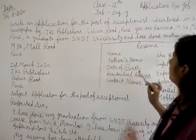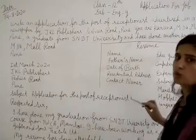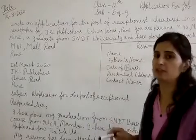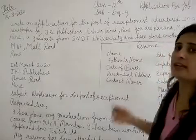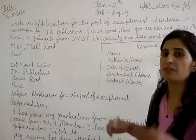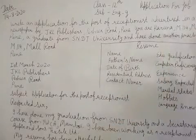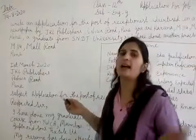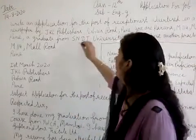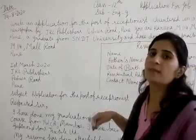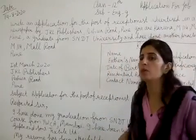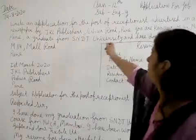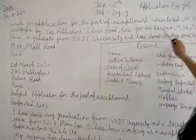Now, first of all, you want a job of receptionist. And from where do you get the information? The information will be from a national newspaper. And where do you get the job? At J.K.L. Publishers. This is the address of J.K.L. Publishers.